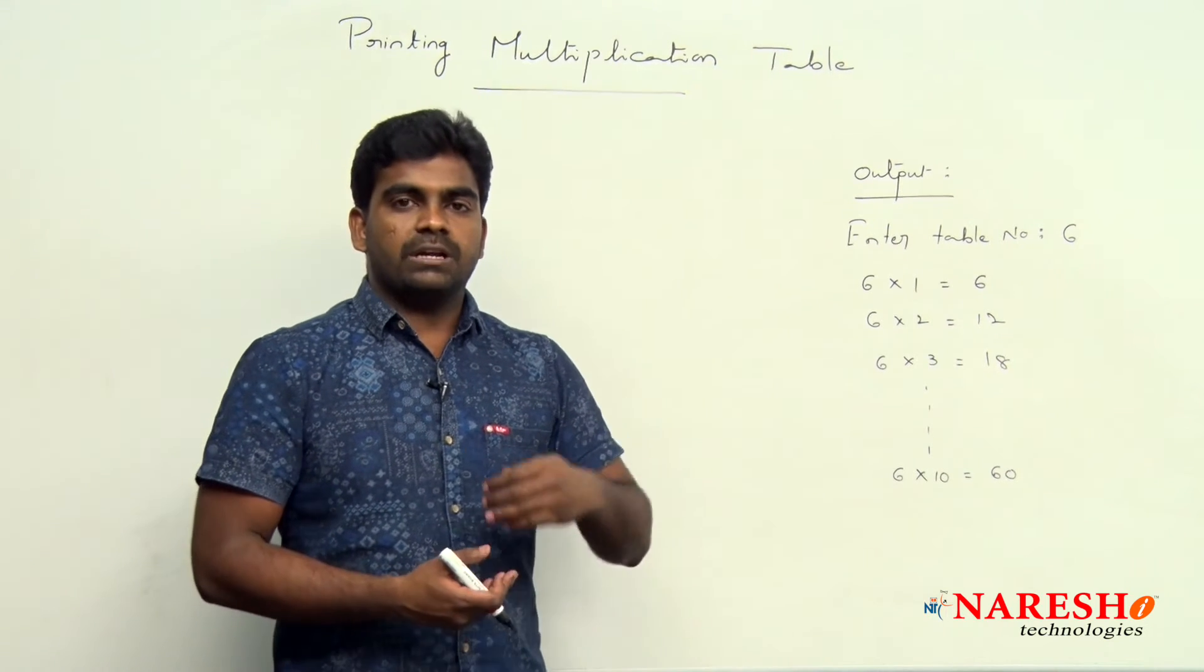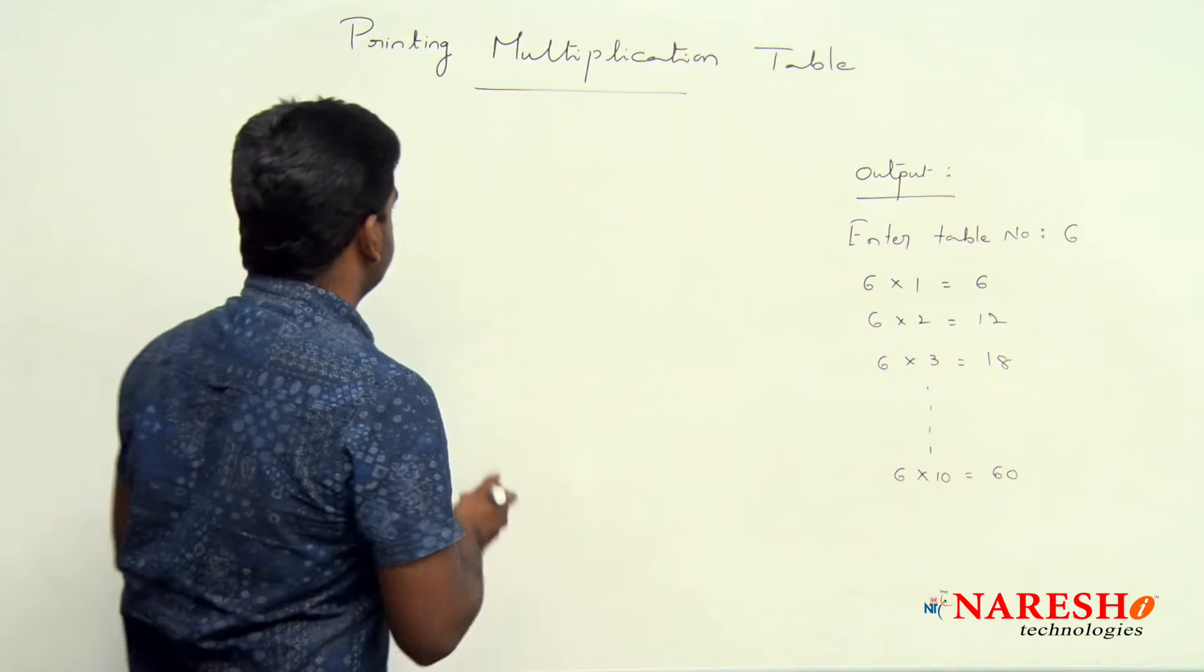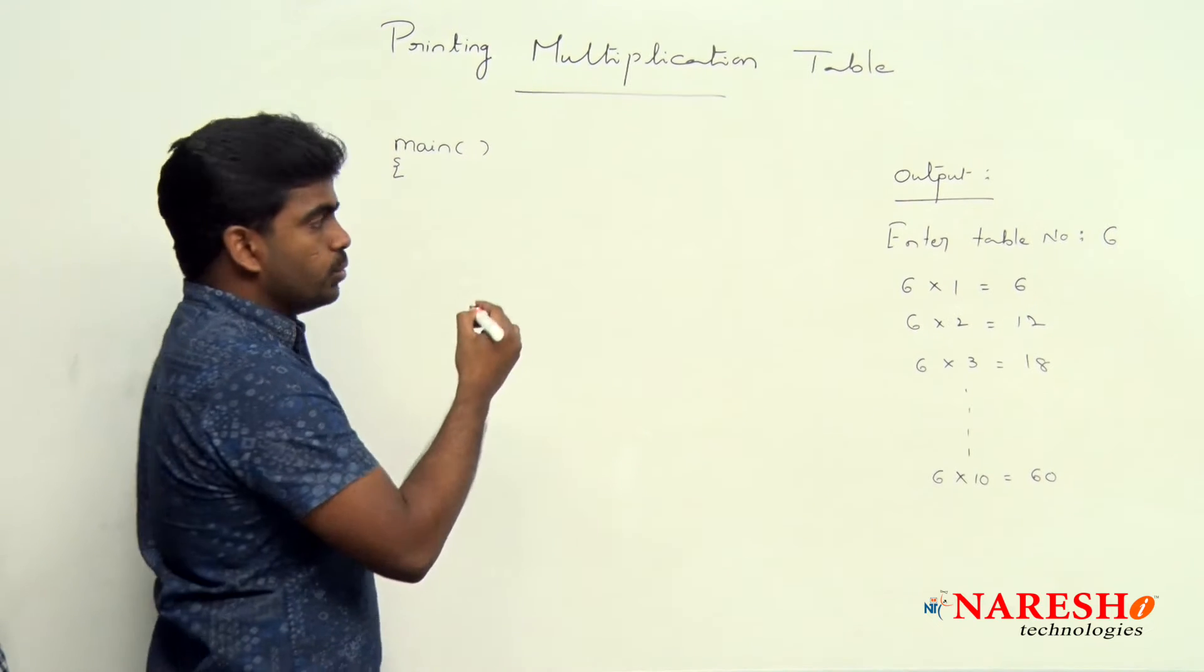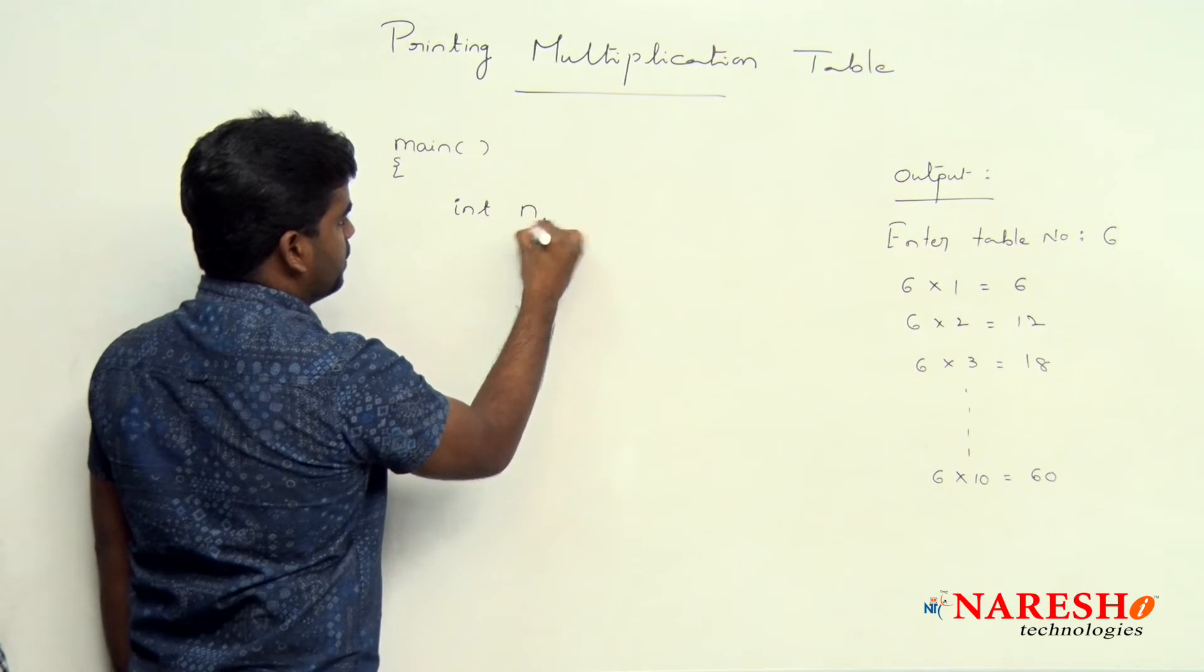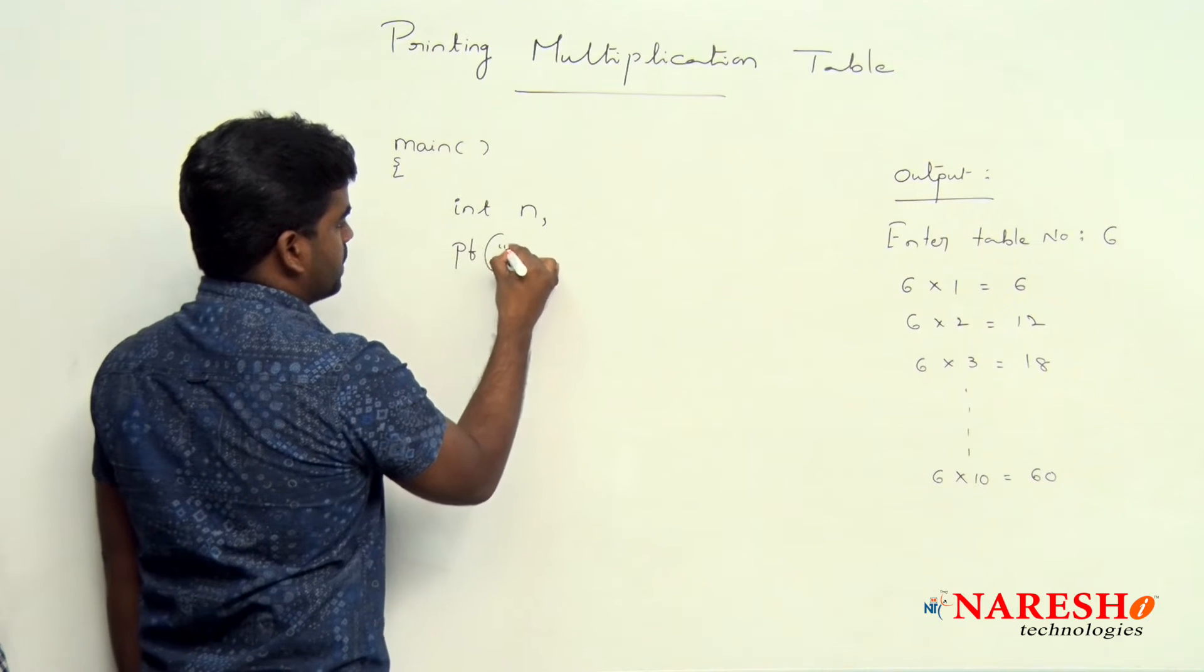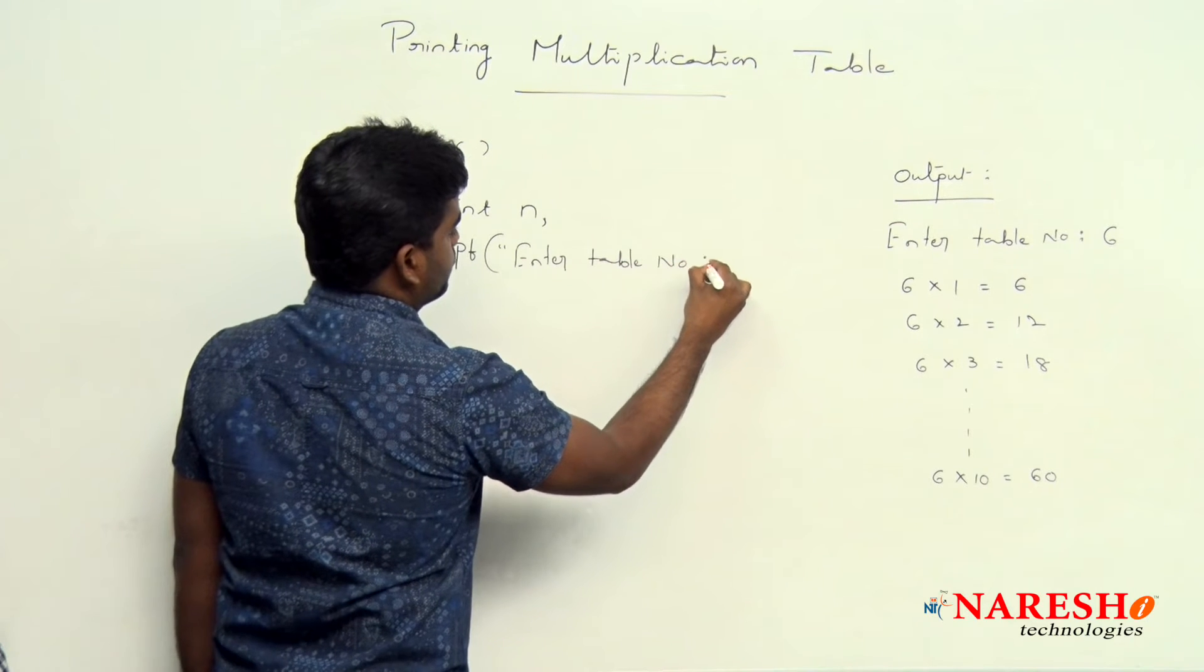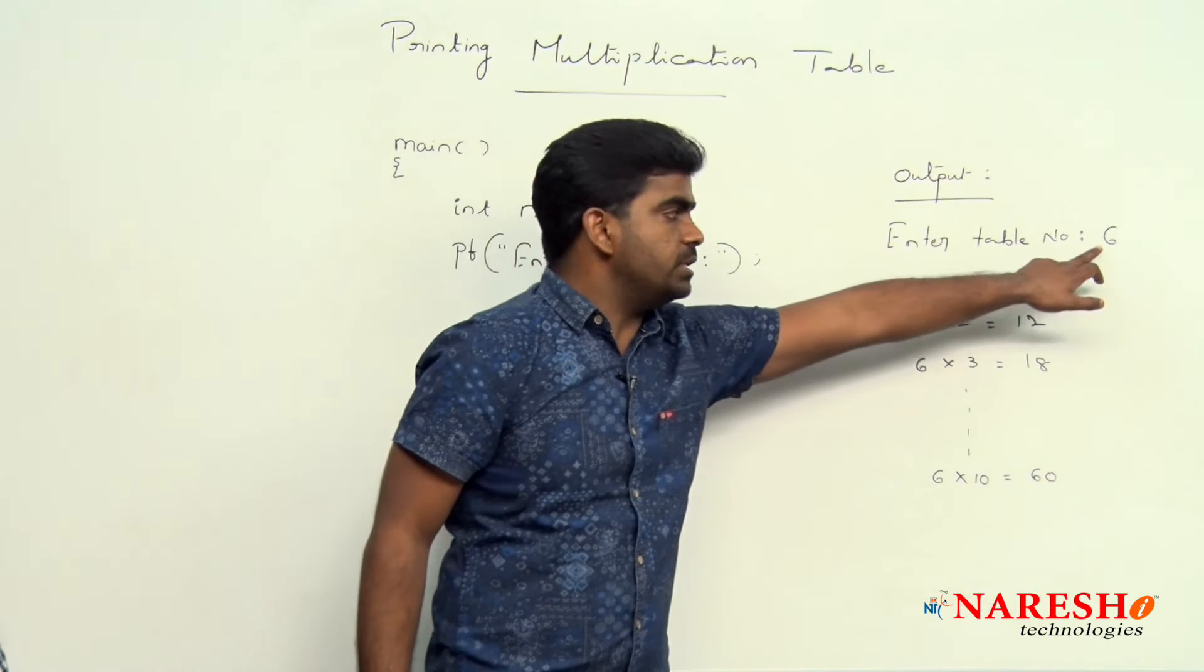After writing the code, whatever the input number you give, you will get the output. Here execution starts with the main function. To read that table number, we are declaring one variable n and just printf the same message enter table number.